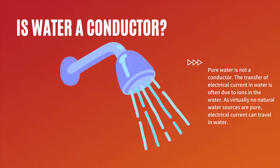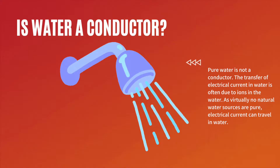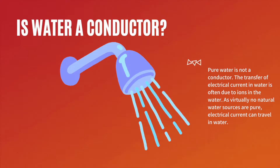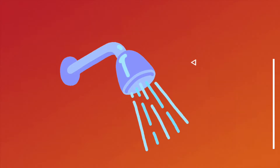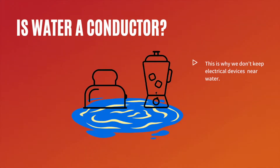Now you might think, is water a conductor? Pure water is not a conductor. The transferal of electrical current in water is often due to ions in the water. As virtually no natural water sources are pure water, electrical current can travel in most water found throughout the world. This is why we don't keep electrical devices near our water, like bathtubs or sinks.